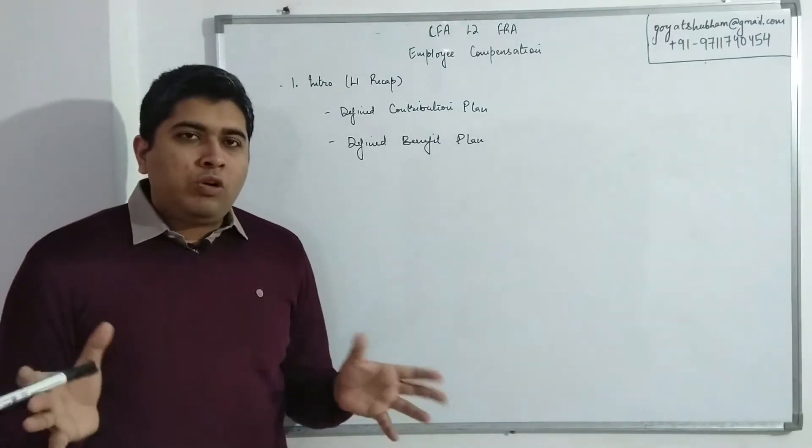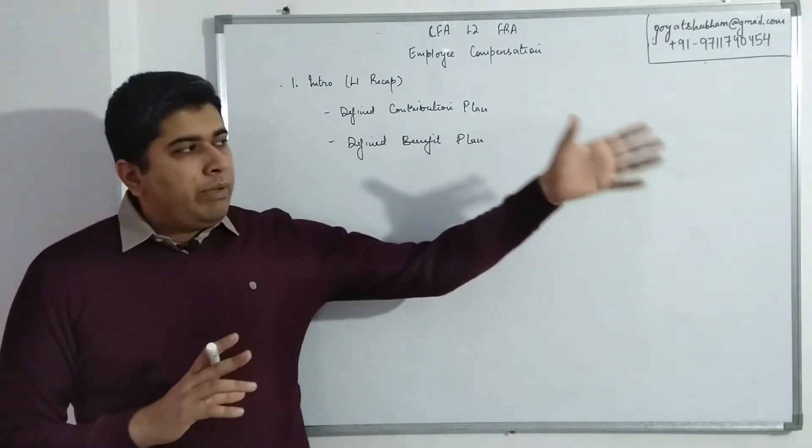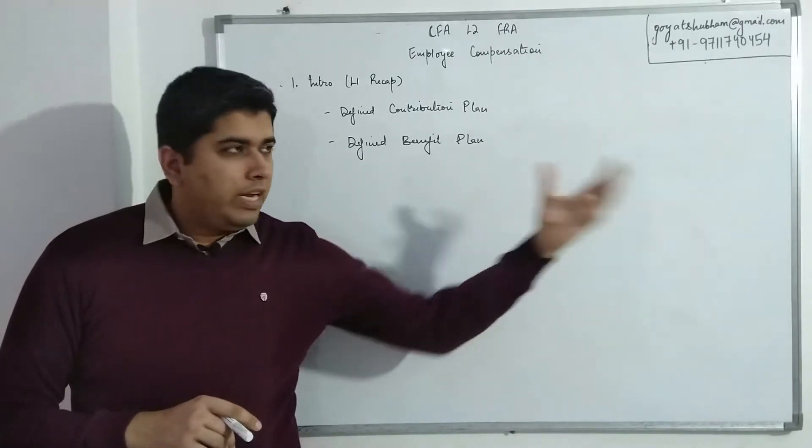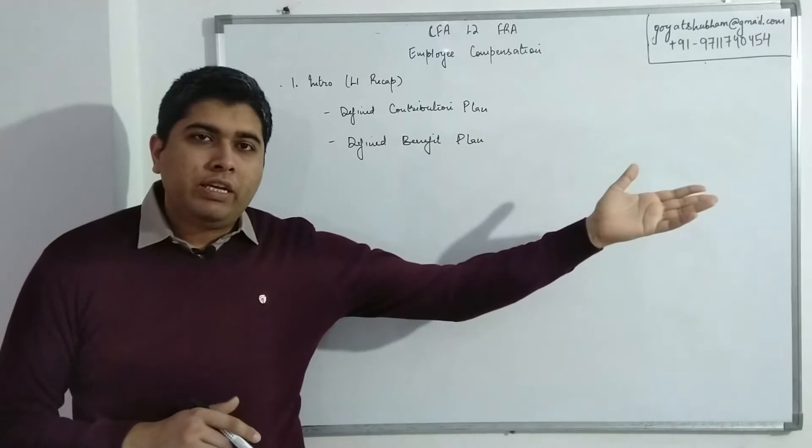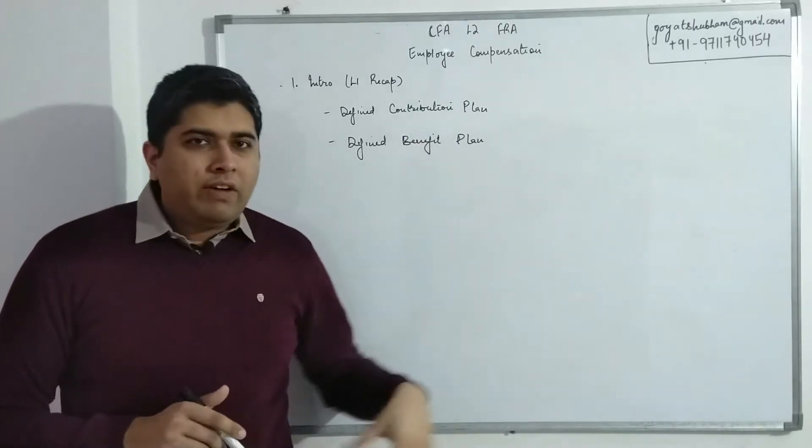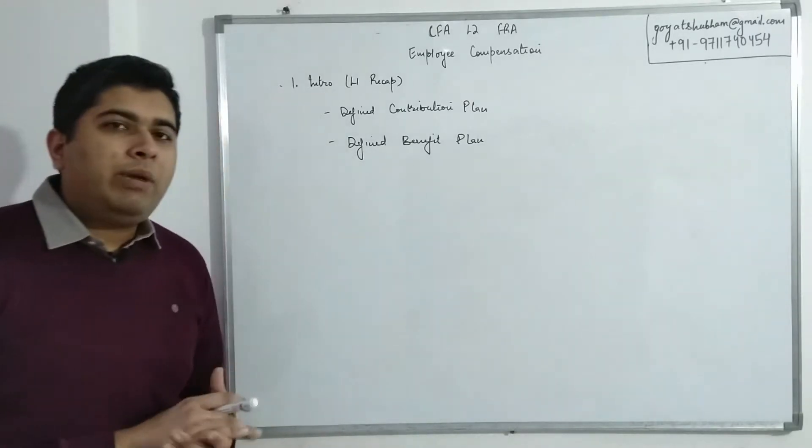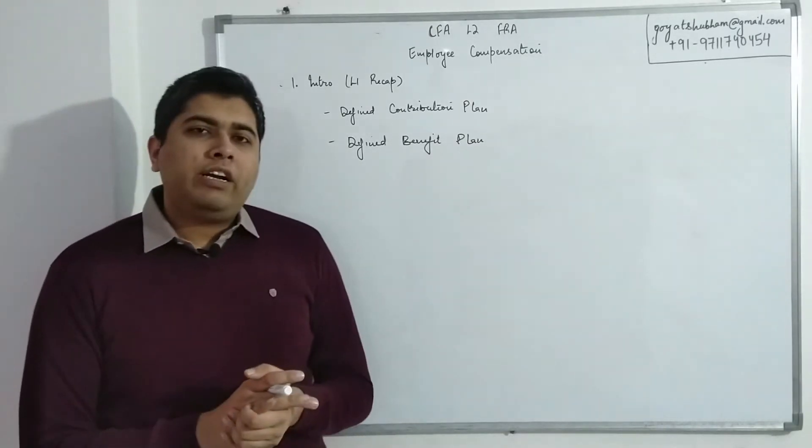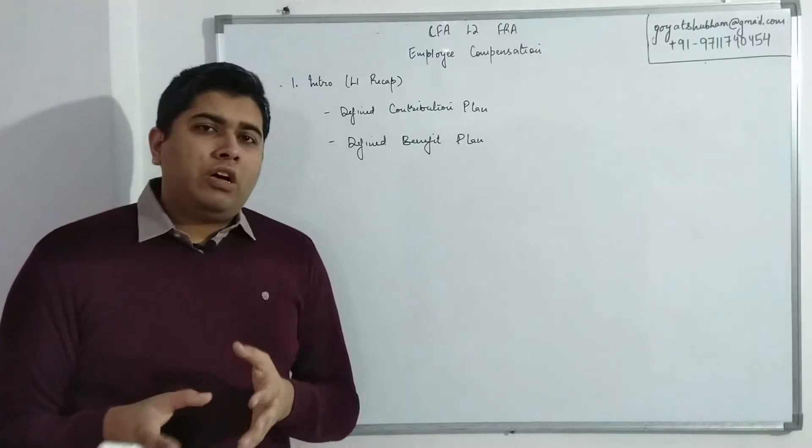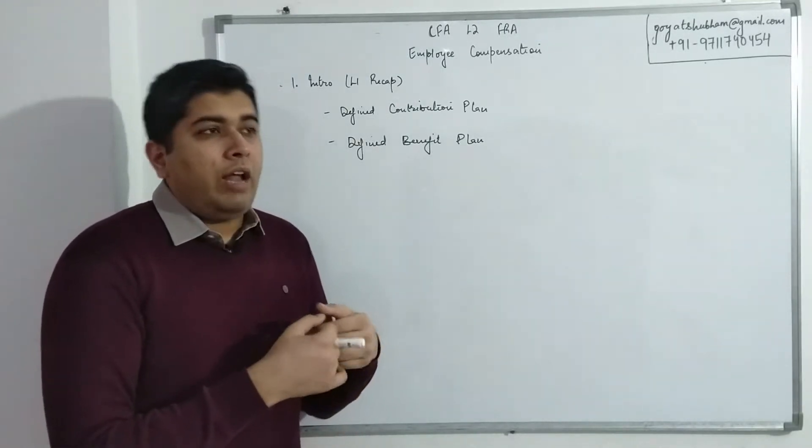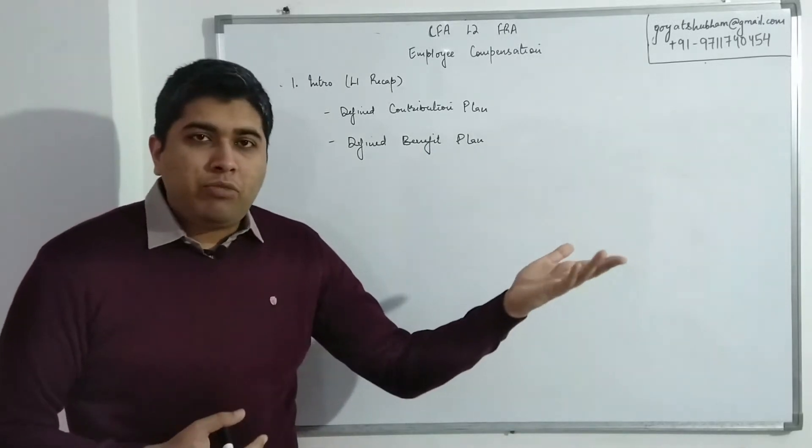So employer already knows that if this employee works with me for next 20 years, I will then have to start making payments to him in the form of pensions starting from his age of 61, maybe let's say for the next 15 years. So from age 61 to 75, the employer will have to make payments. So just like in time value of money at Level 1 Quants you did, if I know the payments I have to make after 20 years and I know the number of payments I'll be making, if I can just get present value of them I can start making investments right now.